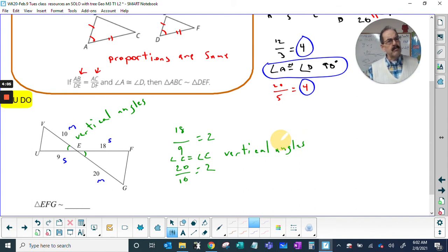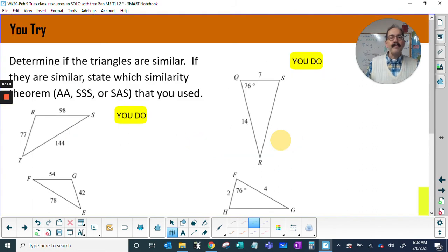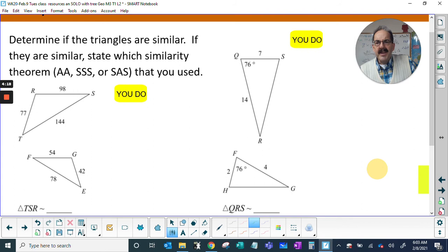And we have angle E congruent to angle E—vertical angles. Now, how does that help us with real world problems? This is going to be your homework: Angle-Angle, Side-Side-Side, Side-Angle-Side. See if you can make sense of this triangle.